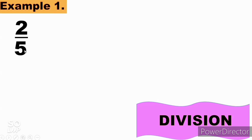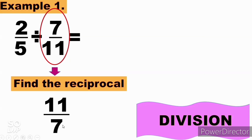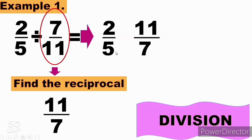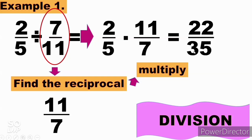Now, how to divide fractions: 2 over 5 divided by 7 over 11. The first step is to find the reciprocal of the divisor, which is 7 over 11. It becomes 11 over 7 — we flip the numerator and denominator. Then we change the division sign to multiplication, so it becomes 2 over 5 times 11 over 7. Multiplying: 2 times 11 is 22, and 5 times 7 is 35. The answer is 22 over 35. That is how to divide fractions. Thank you for watching!